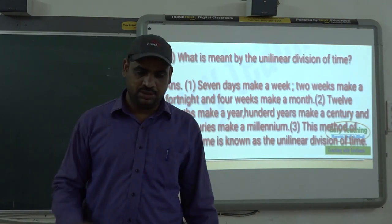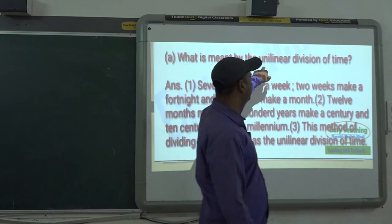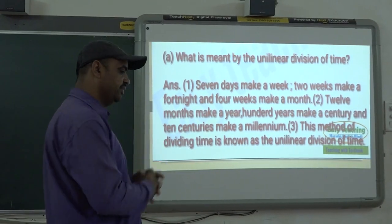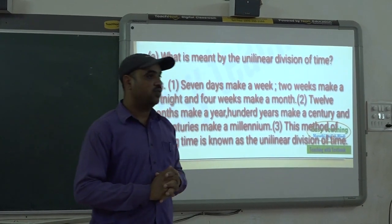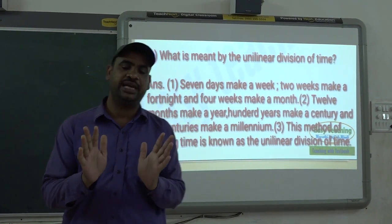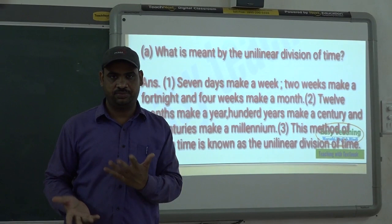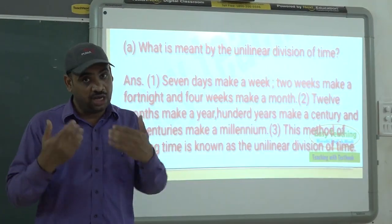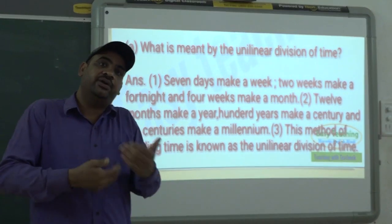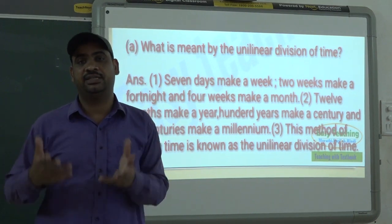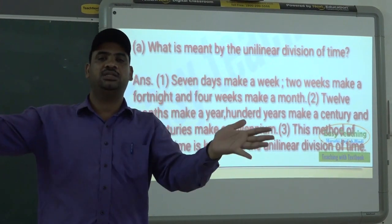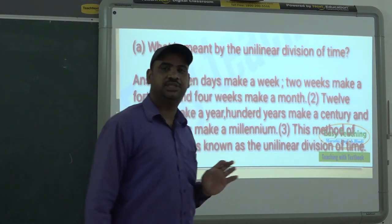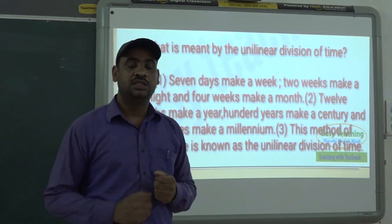In your lesson there is one concept called unilinear division of time. For our convenience, we have divided time into three groups: past, present, and future. We have also divided time into micro and large groups, and this is called unilinear division of time.